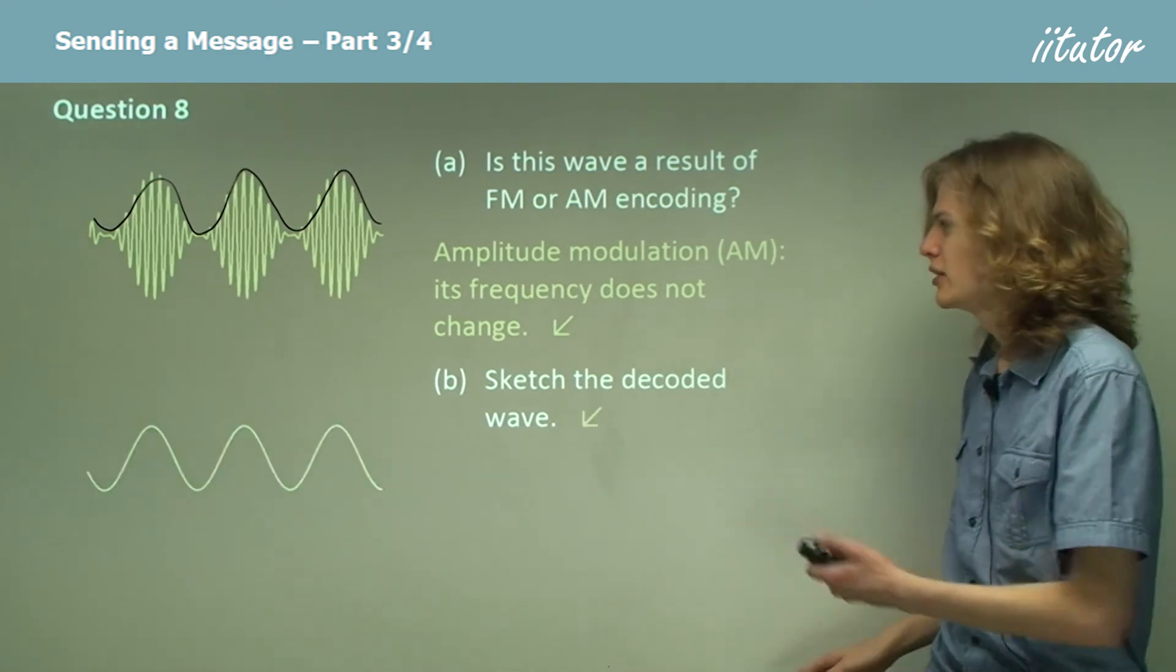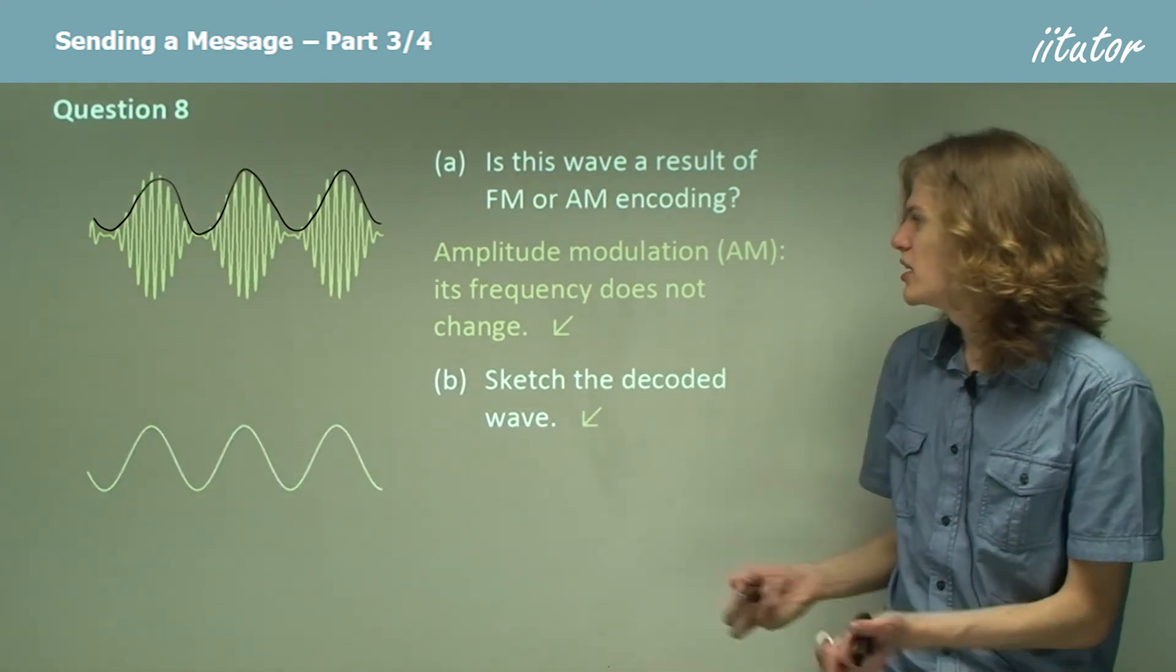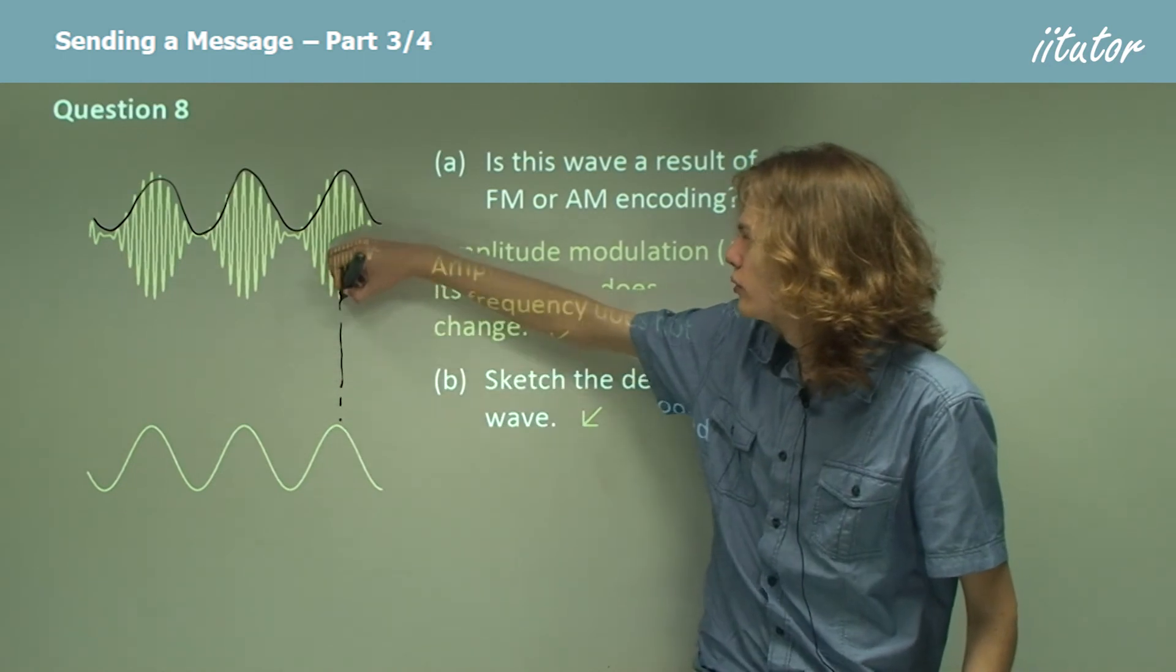So a wave should look something like this—just trace out the amplitude of the wave. If you want it a bit neater, it might look something like this. We can see that it's always going to line up with the original wave.